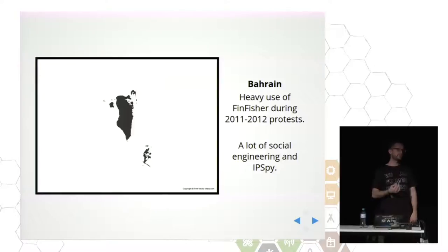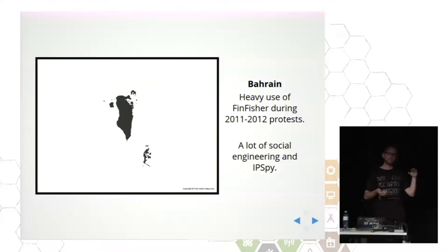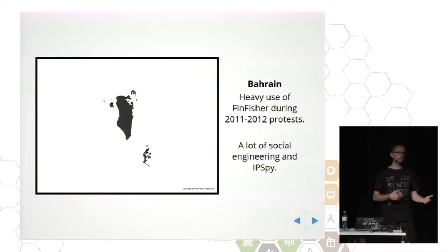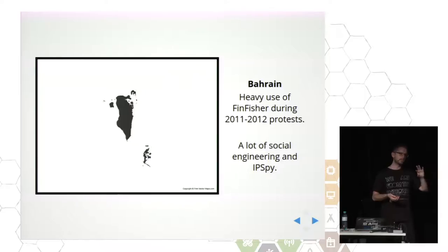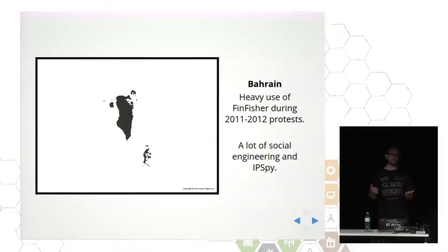Another example we worked extensively on has been Bahrain. Bahrain was actually the way through which we started all investigative research in targeted surveillance and the surveillance industry. During the 2011–2012 protests in the Arab Spring, we saw a great amount of attacks happening against political dissidents and activists engaged in the protests. Many of them at that point were being targeted with FinFisher — and that was the first time we observed FinFisher in the wild, which kicked off a whole big multi-year-long research effort. At some point, probably also as a result of media attention after our publication exposing the use of FinFisher in Bahrain, this faded out and they started using different techniques.